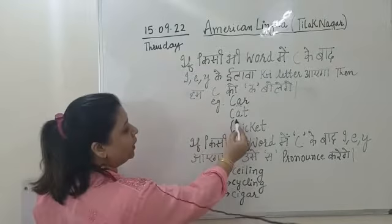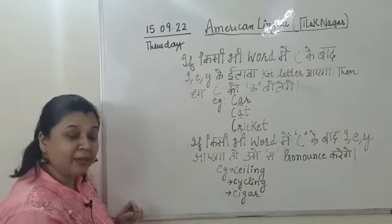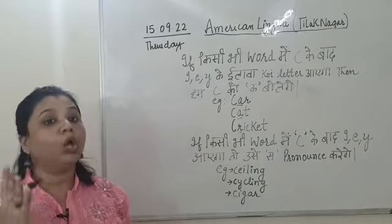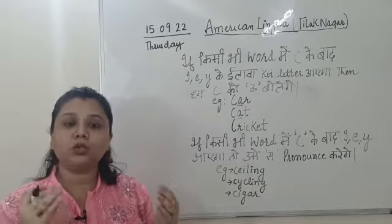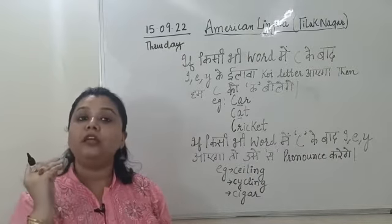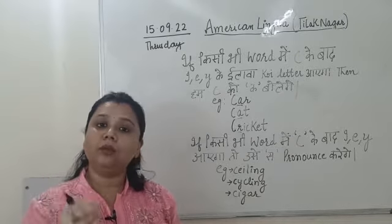Here we are getting A, and again here we are getting R. So that means after C, no I, no E, no Y. So that means in any word, if no I, no E, no Y after C, then we'll pronounce it as 'ka'.